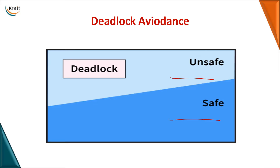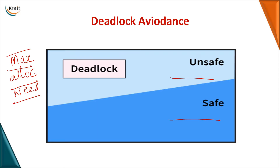In avoidance, before you allocate a resource, you need information about the maximum number of resources available, how many resources are being allocated to a particular process, and what is the maximum need — that is, the additional resources a process wants. This additional information must be present with us: the maximum need, what is allocated, and what is the next need required for a process.